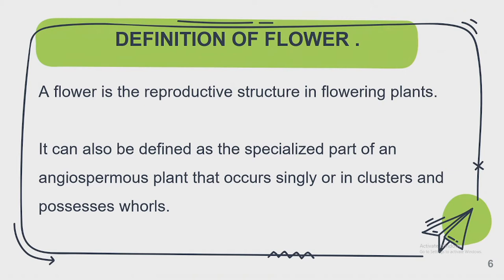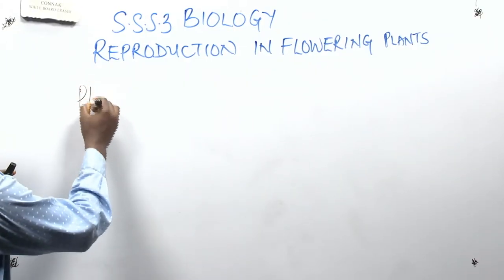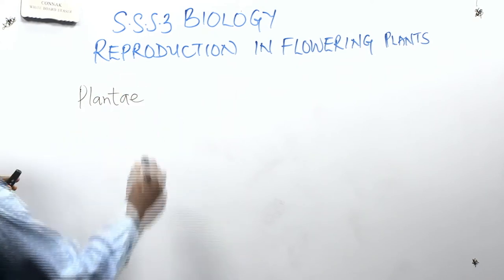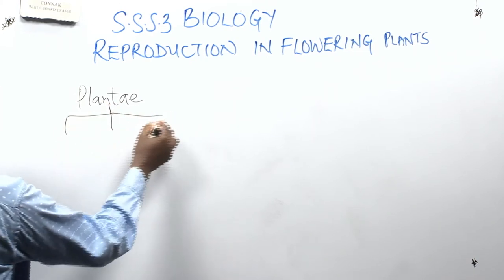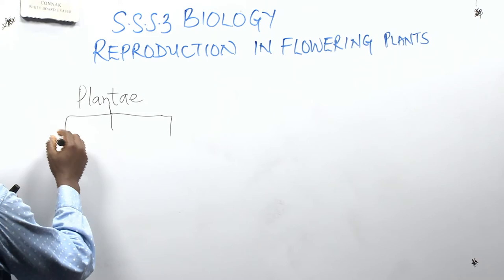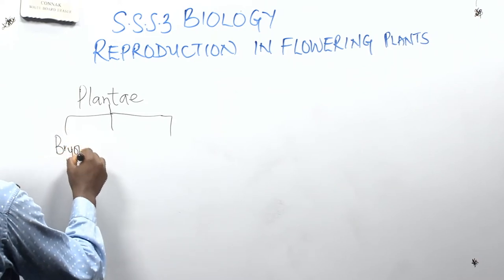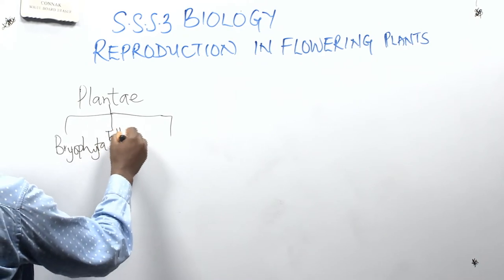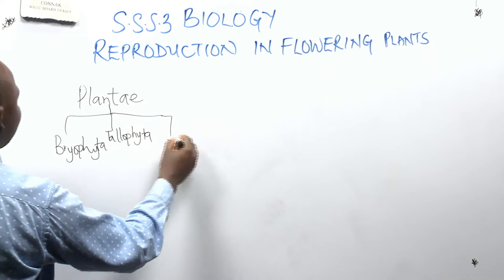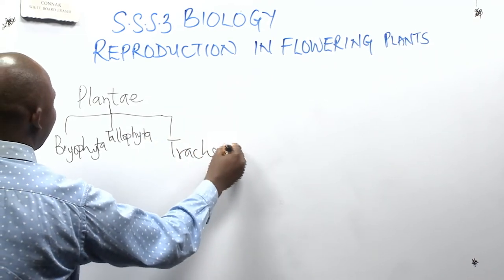Remember from SS1, when you were taught the classification of living things, talking about the kingdoms. We have plants as one of the kingdoms — Kingdom Plantae. Now that Kingdom Plantae was divided into three: Bryophyta, Thalophyta, and Tracheophyta.